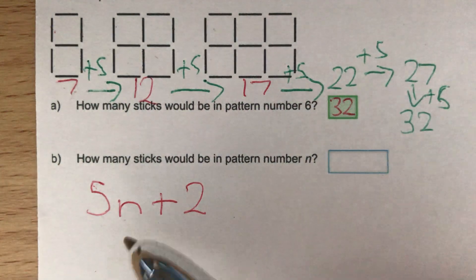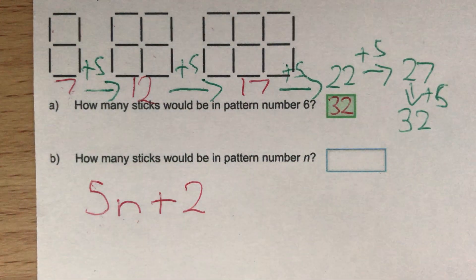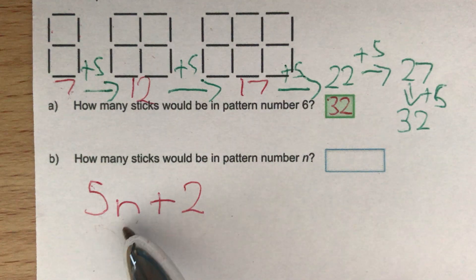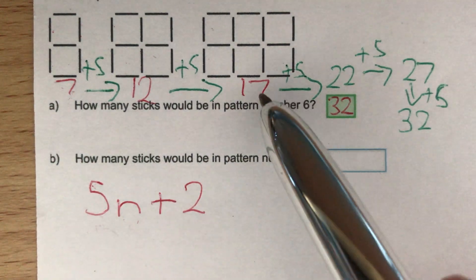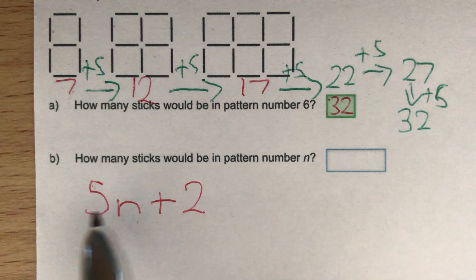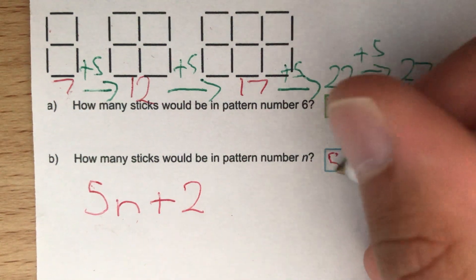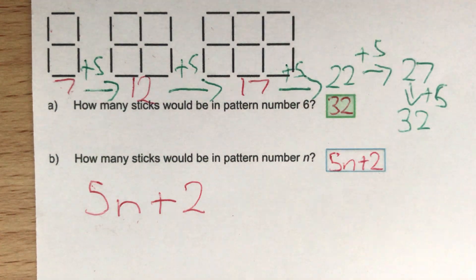And we can check this. If we put say a 1 into here, 5 times 1 plus 2 gives us 7. If we put say a 3 in there, 5 times 3 is 15, plus 2 gives us 17, which is our third term up here. So our nth term, the amount of sticks in pattern number n, is 5n plus 2.